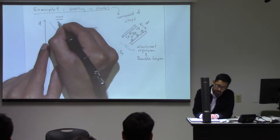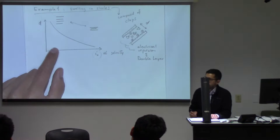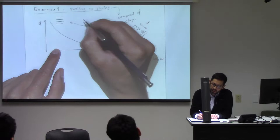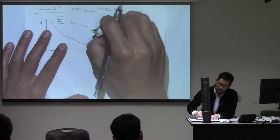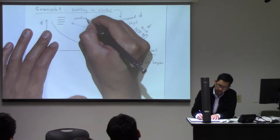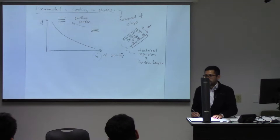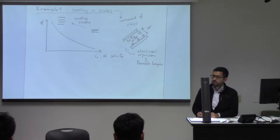To space clay particles, if we have a very low ionic concentration, this is going to be much larger. And between this and that, if you were to change the ionic strain, this is going to be a swelling strain because of change of ionic concentration in the rock.